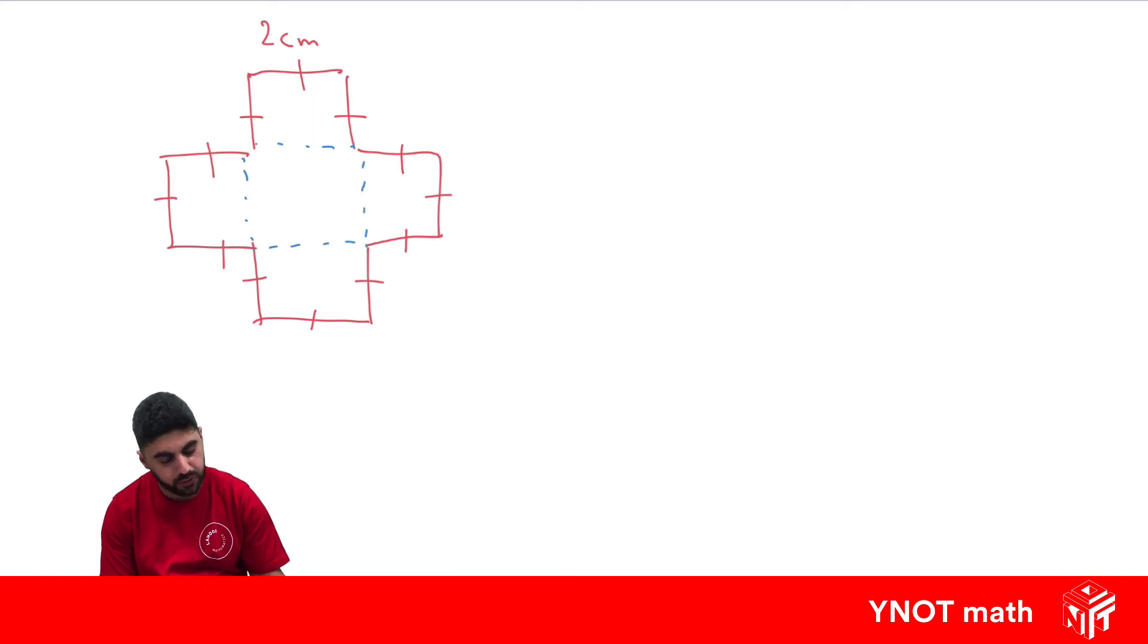into five smaller shapes, and every single one of those is exactly the same. They're just five squares that are all 2 by 2 centimeters. So here we can find the area of one of the squares